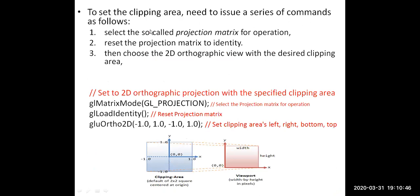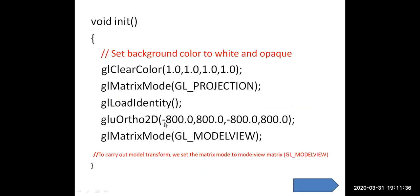To set the clipping area, a series of commands is issued: first, select the projection matrix; then reset it to the identity matrix; then choose a 2D orthographic view with the desired clipping area. gl_matrix_mode is called with the constant GL_PROJECTION to set the projection matrix. gl_load_identity resets the projection matrix. glu_ortho_2D sets the clipping area with x-min=-800, x-max=800, y-min=-800, y-max=800.